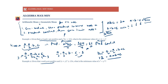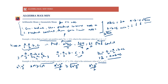Next example: given x and y are positive, and (x+y)² ≥ 256, what is the minimum value of x²+y²? Let's treat x² and y² as our two numbers and apply AM-GM: (x²+y²)/2 ≥ √(x²y²) = xy (since x,y are positive). This gives x²+y² ≥ 2xy.